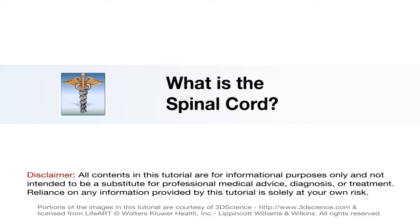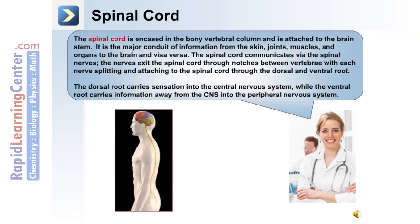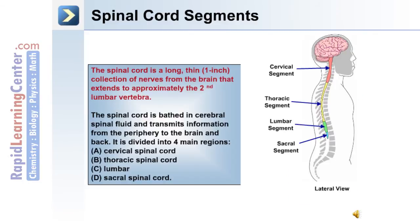Let's begin with an overview of the spinal cord. The spinal cord is encased in a bony vertebral column and is attached to the brain stem. It is the major conduit of information from the skin, joints, muscles, and organs to the brain and vice versa. The spinal cord communicates via spinal nerves, which exit through notches between vertebrae, splitting into dorsal and ventral roots. The dorsal root carries sensation into the central nervous system, and the ventral root carries motor commands from the CNS into the peripheral nervous system.